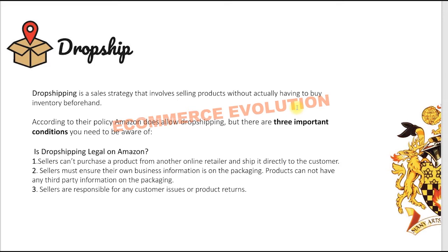When a customer places an order on your listing, you go to the supplier or wholesaler where you know that product is available, and you tell them to send that product directly to the customer's address as mentioned on Amazon. So you don't need to buy inventory at the start, but it's a little bit risky model.